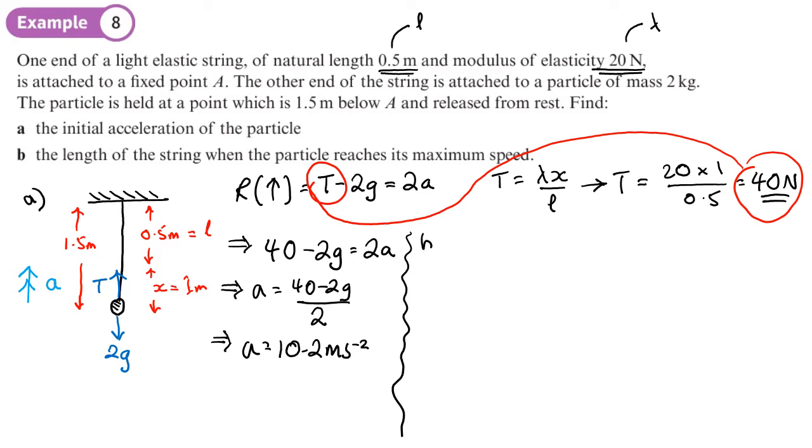Part b, the length of the string when it reaches its maximum speed. Now at the maximum speed, there's no acceleration. So you could say now it becomes an equilibrium problem, the forces are balanced, so there is no F equals ma.